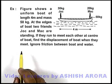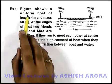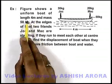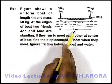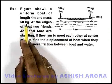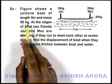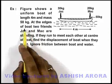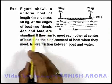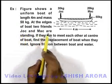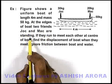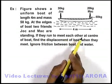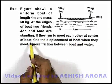In this example, the figure shows a uniform boat of length 4 meters and mass 50 kg. At the edges of the boat, two friends Jock and Mac are standing. They run to meet each other at the centre of the boat.